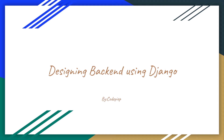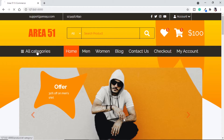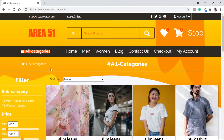Welcome back to CodPipe. We are designing the backend for our ecommerce Django website. In the previous video we saw how to make a search and how to sort our category page. In this video we will see how to make use of filters on our category page. We are using the all categories page because we will have more than one subcategory and it will show better usage of this filter.